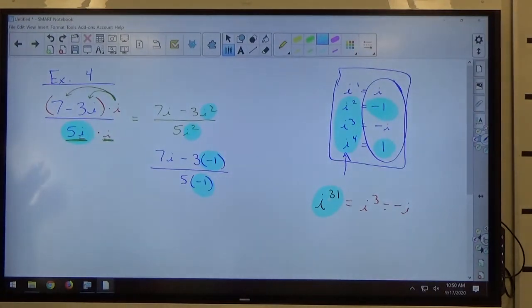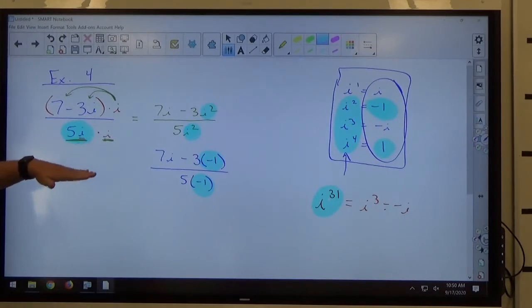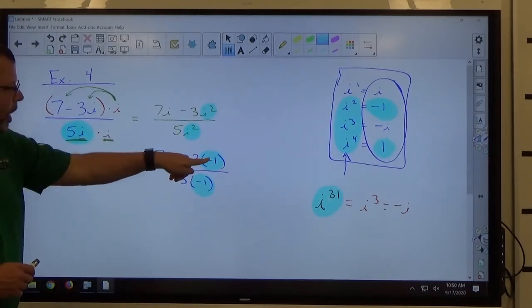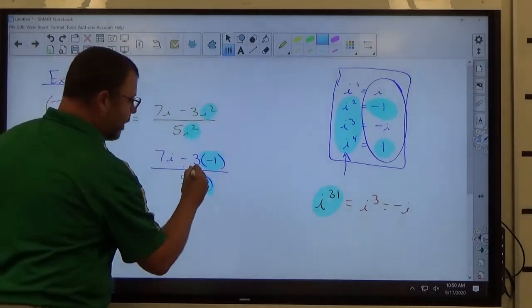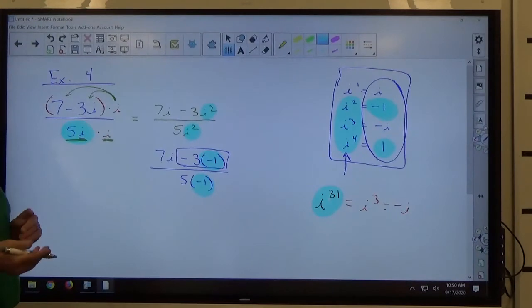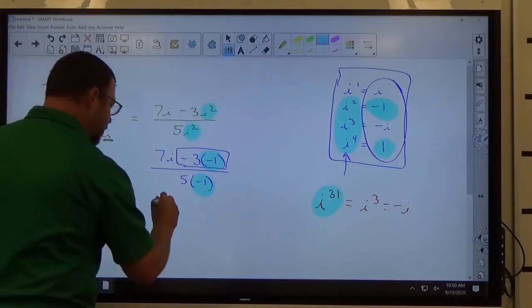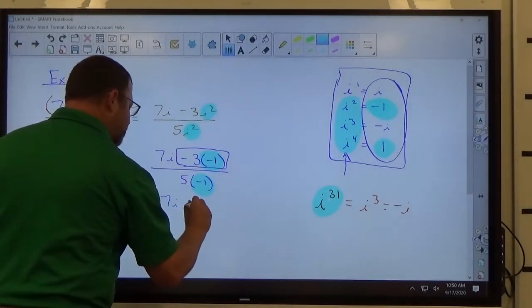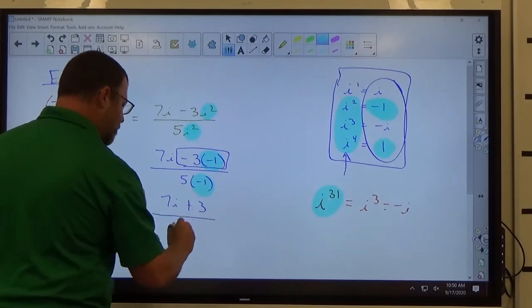And the final couple steps here. The 2 negatives make a positive. This is a product right here. The minus sign is part of the product. 3 times 1 is 3. 2 minuses make it plus. So I'm going to get 7i plus 3. On the bottom, I've got negative 5.